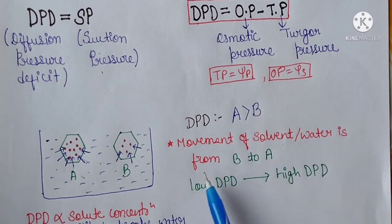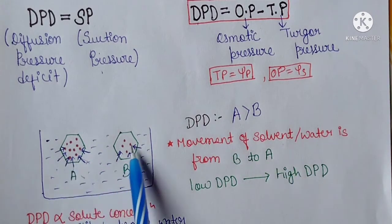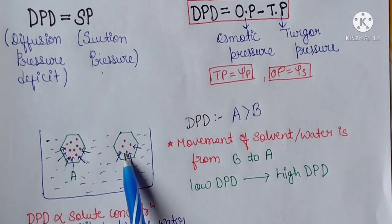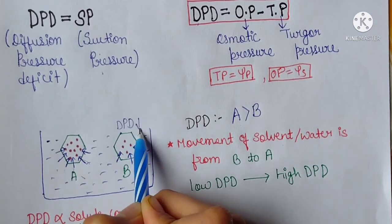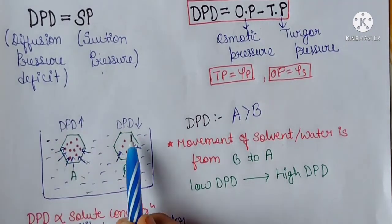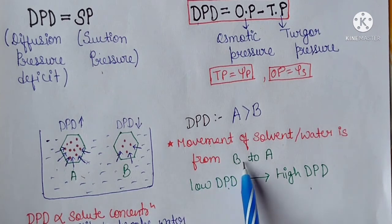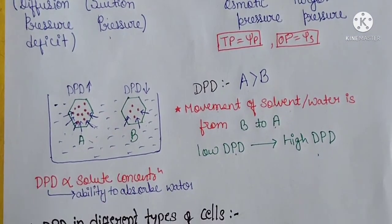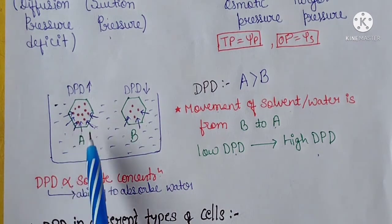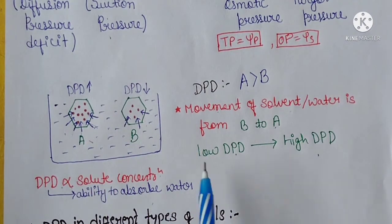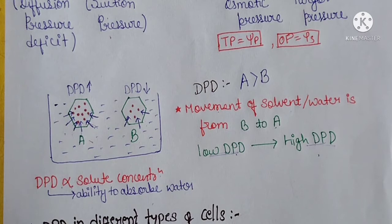If we talk about the movement of solvent or water — which cell moves water to which cell — water moves from higher concentration to lower concentration. Where solute concentration is higher, DPD is higher. The movement of solvent is from low DPD to high DPD. So the movement here is from Cell B to Cell A. DPD is directly proportional to solute concentration. Water moves from low DPD to high DPD.